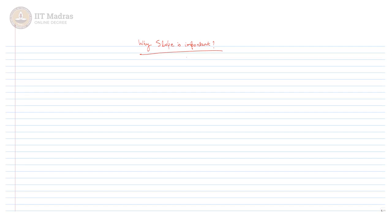Hello students. In this video we will try to see why the slope of a straight line is so important. In general, the equation of a straight line is given as y = mx + c, where m is the slope of the straight line. If we put x equal to 0, we will get y equal to c, hence c is nothing but the y-intercept.